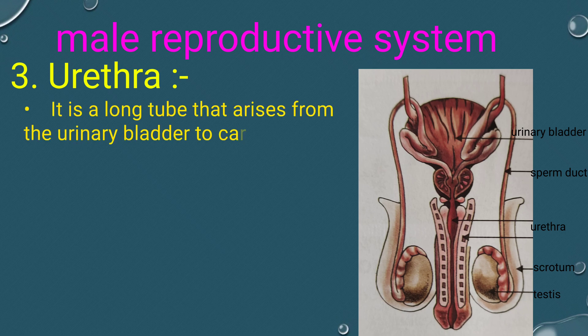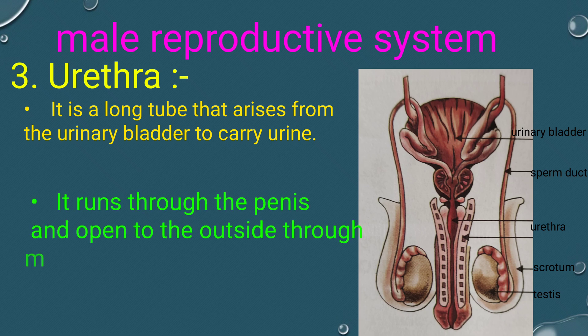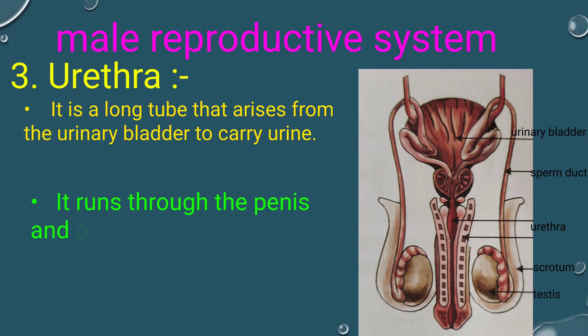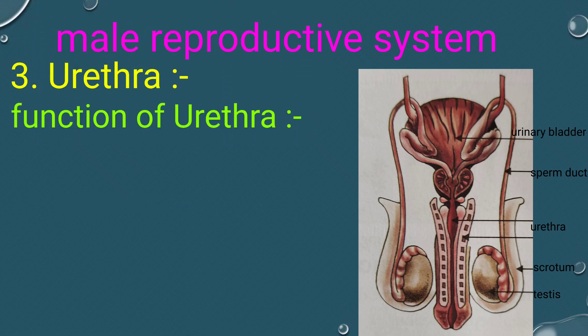The urethra is a long tube that arises from the urinary bladder to carry urine. It runs through the penis and opens to the outside through the male genital pore. Function of urethra: The urethra carries urine from the bladder as well as semen from the vas deferens through the penis.